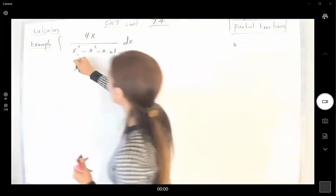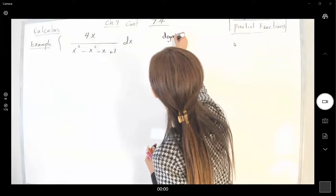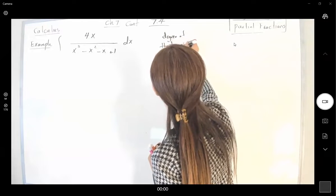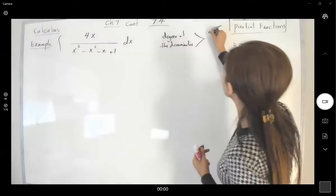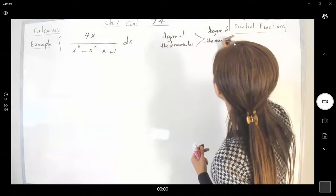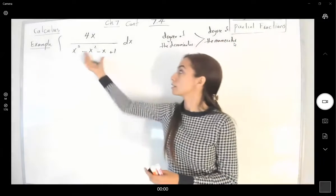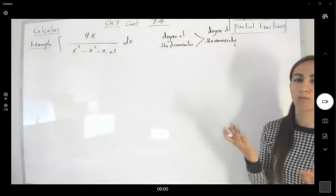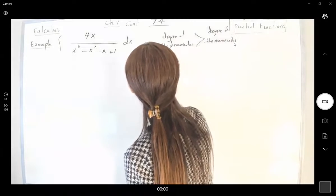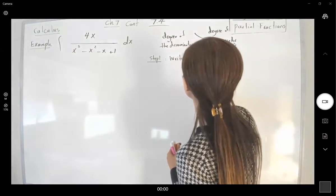First of all, the degree of the denominator is larger than the degree of the numerator. It means that we have to break down our denominator and see what we are dealing with. So step one: write the denominator in factor form.